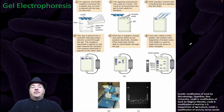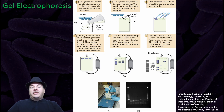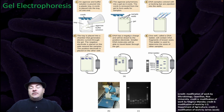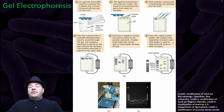Here's a brief summary of how gel electrophoresis works. An agar and buffer solution is poured into a plastic tray and a comb is placed into one end. The agar polymerizes and turns into a gel as it cools. The comb is then removed to form wells in the gel. DNA samples covered with a tracking dye are pipetted into the wells. The tray is placed into a chamber that generates electric current through the gel. The negative electrode is placed on the side nearest the samples and the positive electrode on the other side. DNA, which has a negative charge, will be drawn to the positive electrode. Smaller DNA molecules travel faster through the gel. One well, called a DNA ladder, will contain DNA fragments of known sizes, and is used to determine the sizes of the other samples.